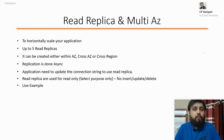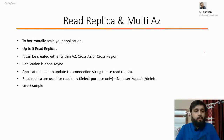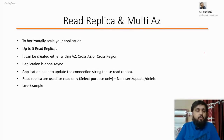Read replicas horizontally scale your application to increase performance. You can create up to five read replicas. They can be created either within the same availability zone, cross AZ, or cross region — meaning you can create a read replica within the same availability zone, across availability zones, or across regions. Replication is async as we just saw. The application needs to update the connection string to use the read replica. Read replicas are for read-only statements — you cannot use them for write operations. They are just for SELECT and read operations.